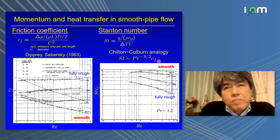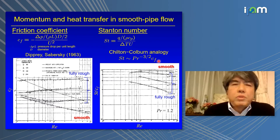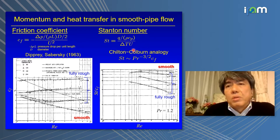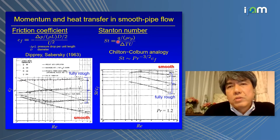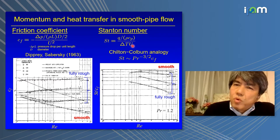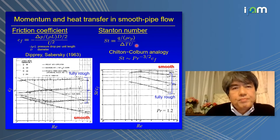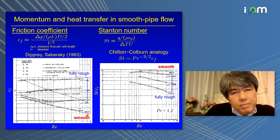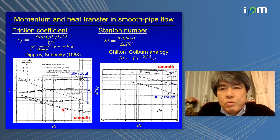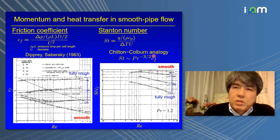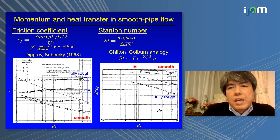Now I'm going to talk about wall-bounded turbulence. In this case, we have two dimensionless parameters: the friction coefficient CF and the Stanton number. The Stanton number is wall heat flux normalized by temperature difference and bulk mean velocity. It is well known that CF decreases with increasing Reynolds number in smooth pipe flow, and due to the analogy between turbulent heat and momentum transfer, decreasing CF implies decreasing Stanton number.